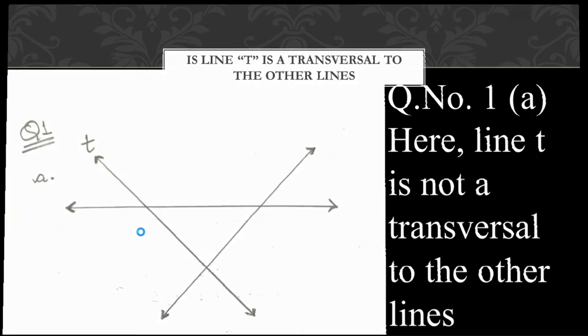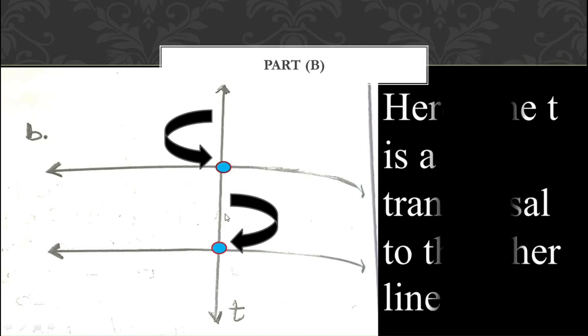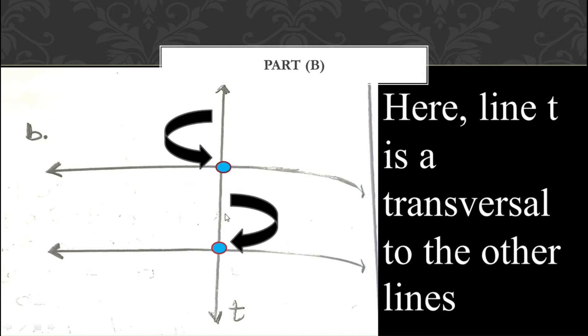Now let us move on to part B. In part B, you can see line T intersecting the other 2 lines on 2 points — this is the first point and this is the second point. So this transversal T is cutting the other lines on 2 points. Yes, here line T is a transversal to the other lines.